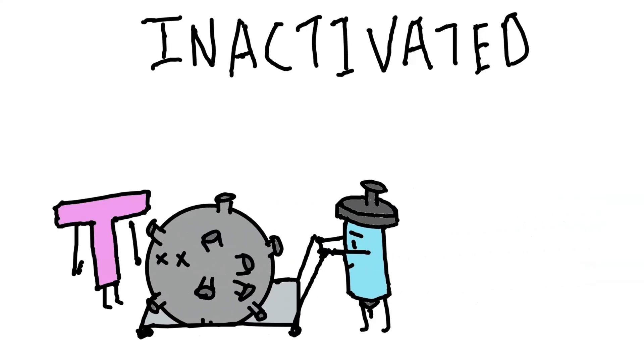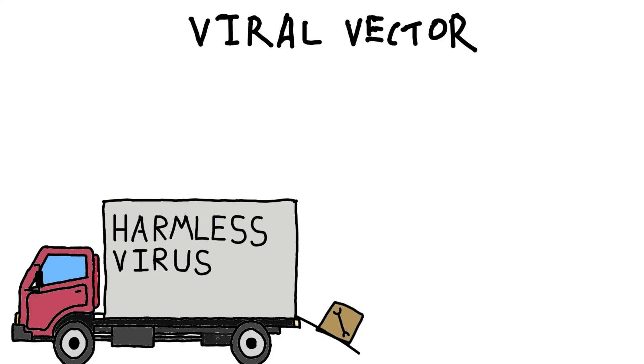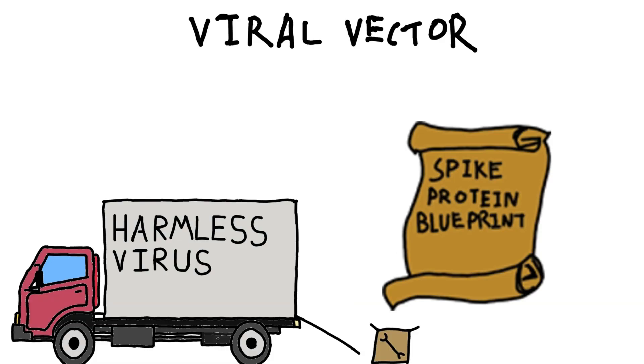Inactivated vaccines use viruses that have been killed or disabled. They can't cause illness, but your immune system can still recognize and learn from them. Viral vector vaccines use a harmless virus to deliver instructions, like a delivery truck. Your cells make a harmless piece of the virus so your immune system can learn to fight it.